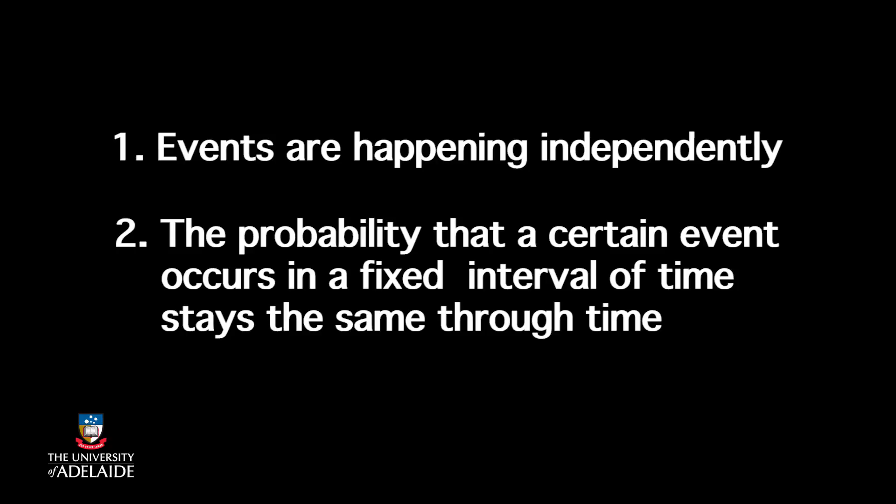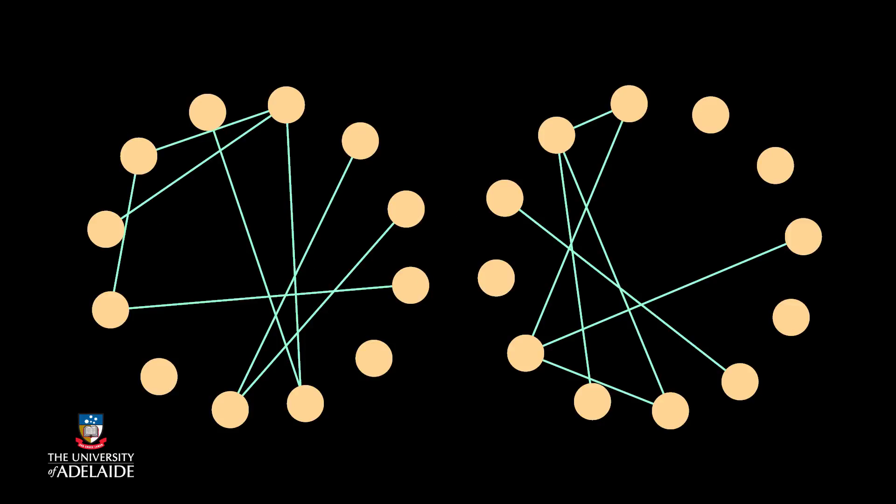If the following requirements are fulfilled, you can expect the value of the events actually follows the Poisson distribution. With this definition, the links in a random graph are added independently and randomly.